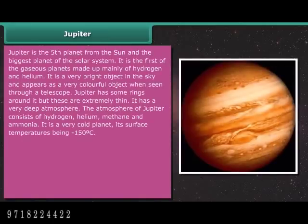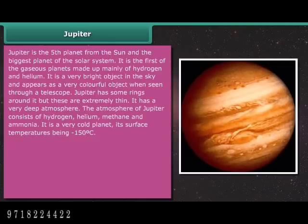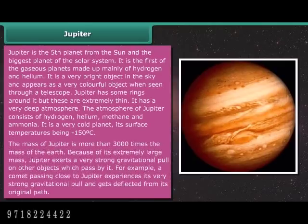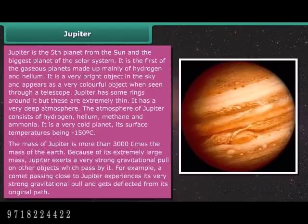Jupiter is the fifth planet from the Sun and the biggest planet of the solar system. It is the first of the gaseous planets, made up mainly of hydrogen and helium, and appears as a very colorful object when seen through a telescope. Jupiter has extremely thin rings and a very deep atmosphere containing hydrogen, helium, methane, and ammonia. It is a very cold planet, with surface temperatures of minus 150 degrees Celsius. The mass of Jupiter is more than 3,000 times the mass of Earth, giving it an extremely strong gravitational pull — for example, a comet passing close to Jupiter gets deflected from its original path.